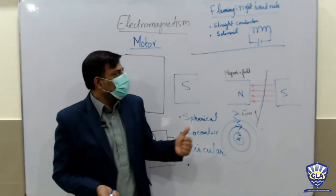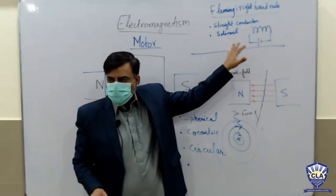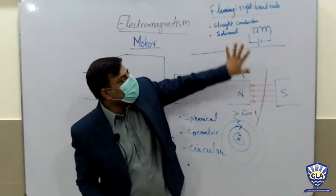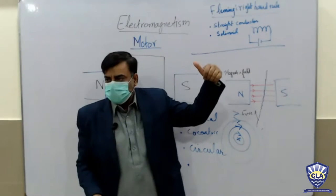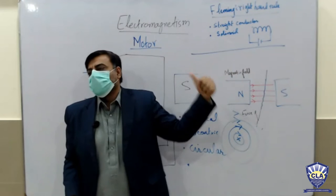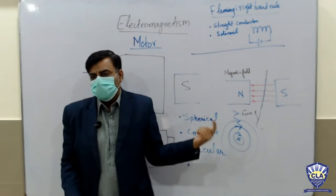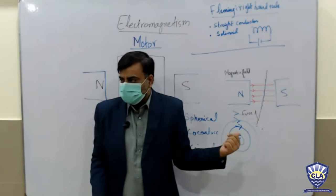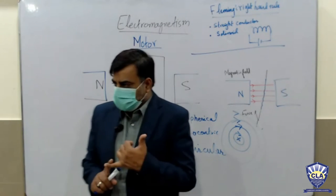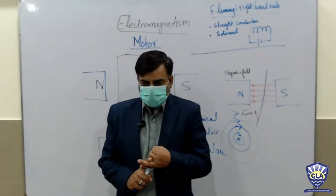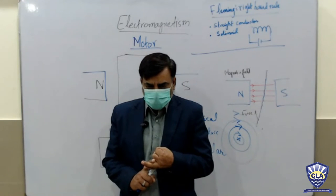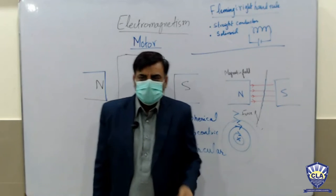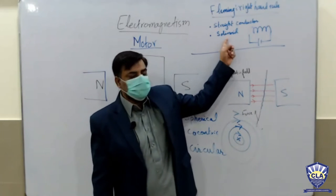We need to hold the solenoid in such a way that the curling of the fingers indicates the direction of current, and the thumb will indicate the north pole of the magnet produced — the direction of the north pole. Both Neha and Ali Jahanzeb explained this. Now, Harman, you tell me — right hand rule for solenoid.